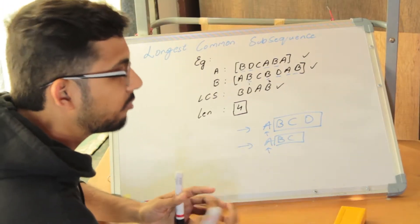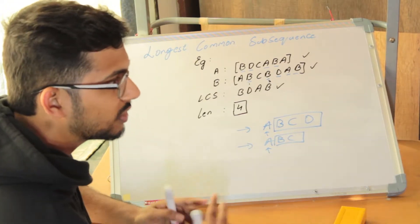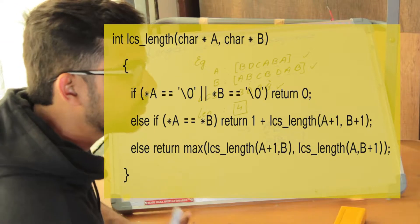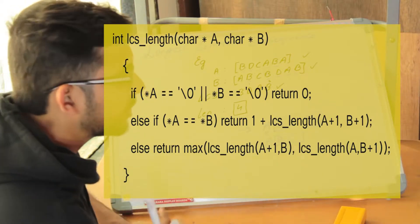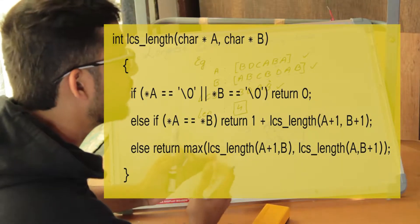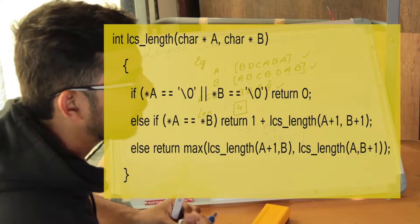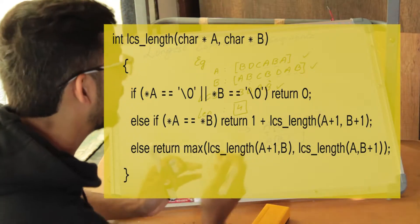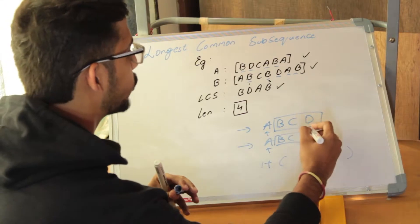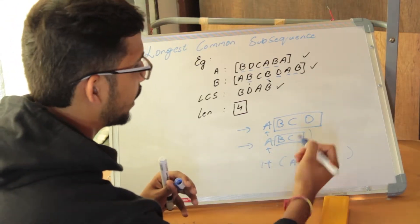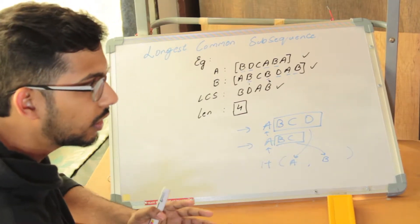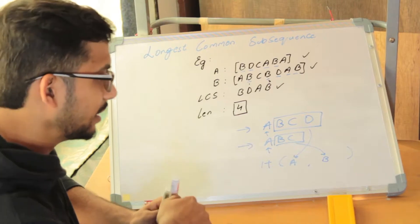Rather than finding the subsequence itself directly, it turns out that finding the length of the subsequence first and then deriving the subsequence is more efficient. This is the recursive program to find the length of the LCS. The first if statement is the base condition checking the end of both strings. The second if checks if the characters in both strings are equal — if so, we increase the count by 1 and recurse on the remaining portions. If you haven't seen the recursive program videos, I'll link them in the description below.